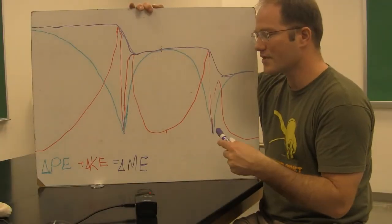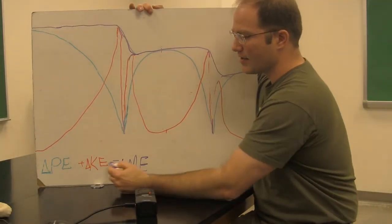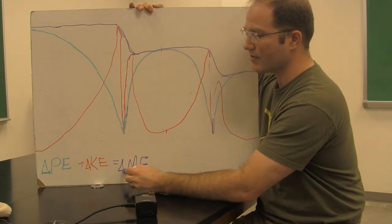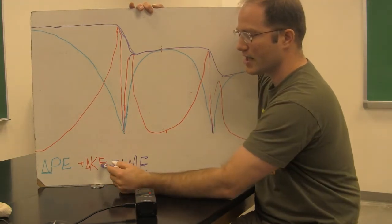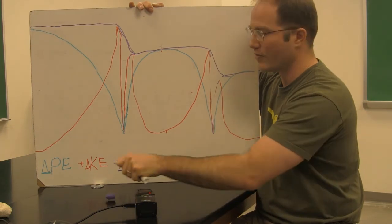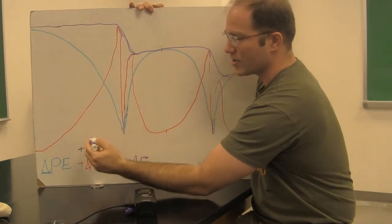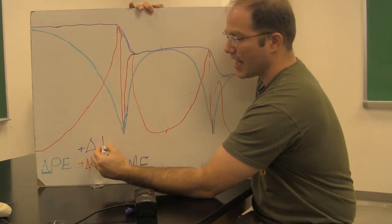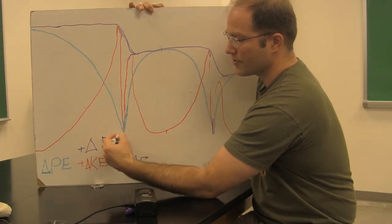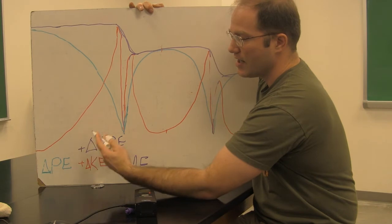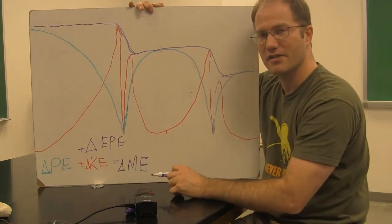So, sort of to sum up, we've noticed that mechanical energy, the change in mechanical energy is equal to a change in potential plus a change in kinetic. And of course, we also now have this third term plus a change in elastic potential energy, we'll call that EPE. Those three things sum up to the change in mechanical energy.